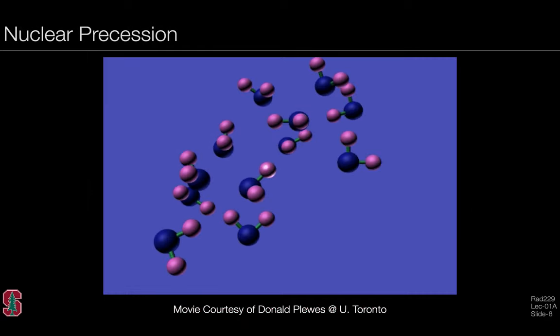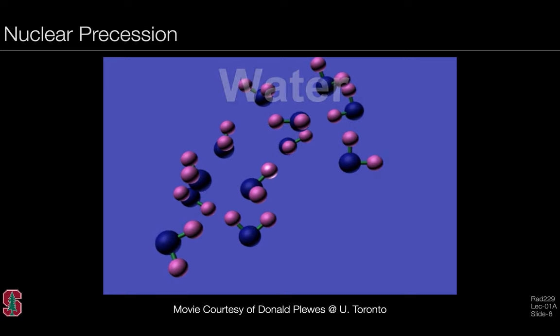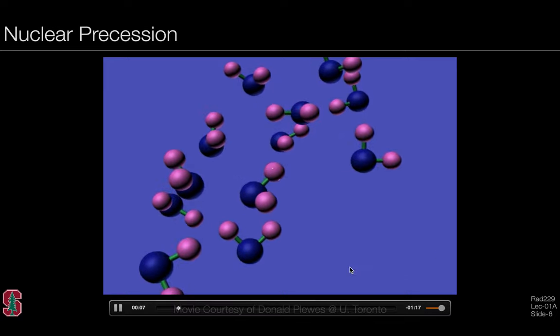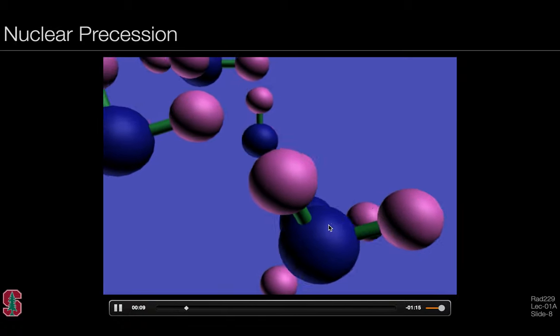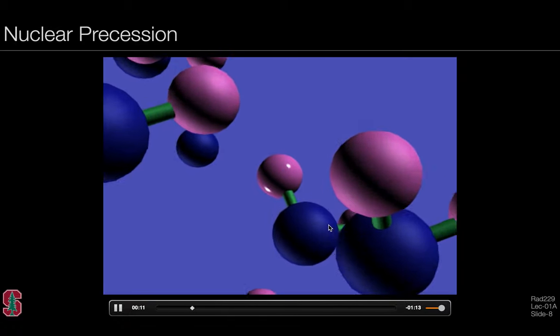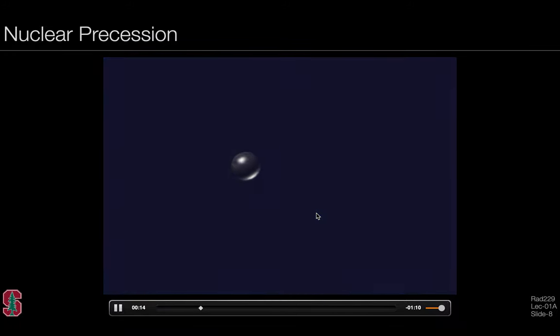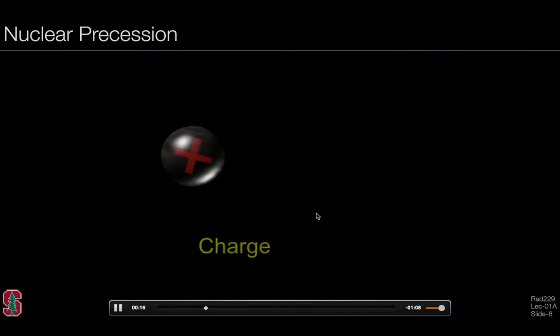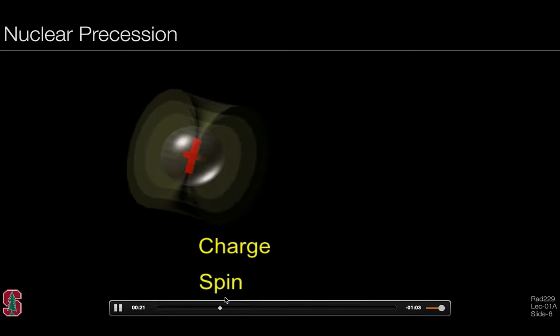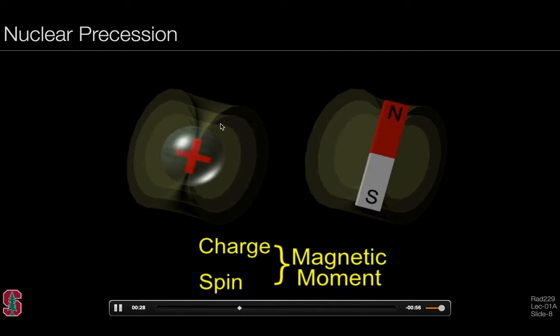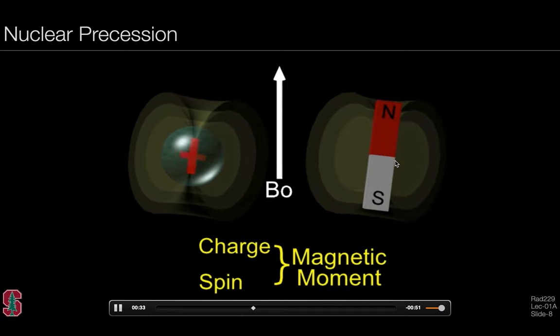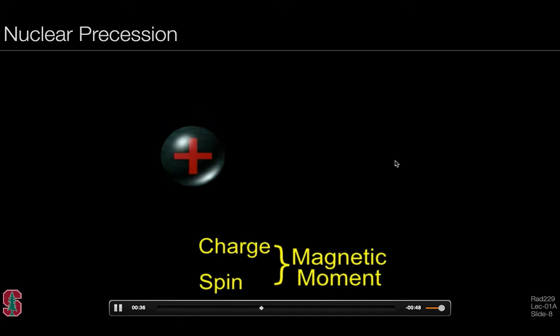When it comes to nuclear precession, we can zoom into a water molecule comprised of two hydrogens and an oxygen. Inside this hydrogen nucleus itself, it's positively charged. In combination with having charge, it has the inherent nuclear property of spin. That combination of charge and spin gives rise to a magnetic moment, meaning the hydrogen nucleus behaves like a tiny magnetic dipole. When placed into an external B0 field, it comes into alignment.